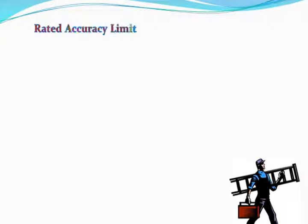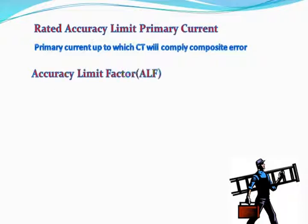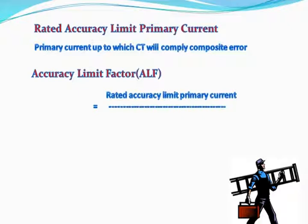Rated accuracy limit primary current: the primary current up to which the CT will comply with composite error. Accuracy limit factor, or ALF, is equal to rated accuracy limit primary current divided by rated primary current.